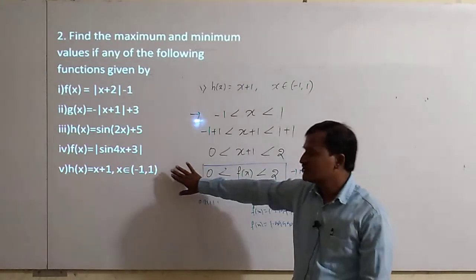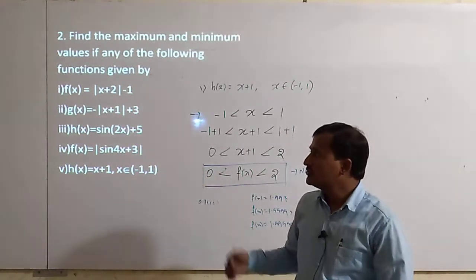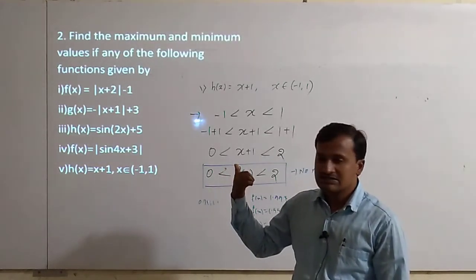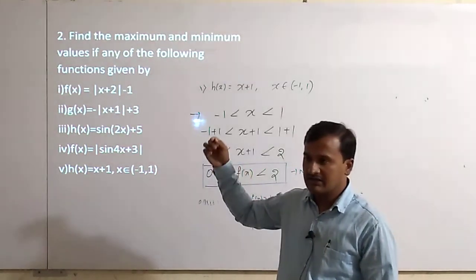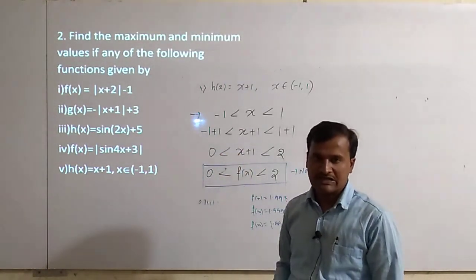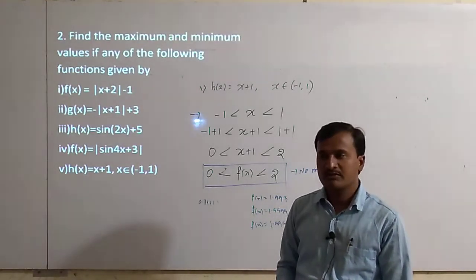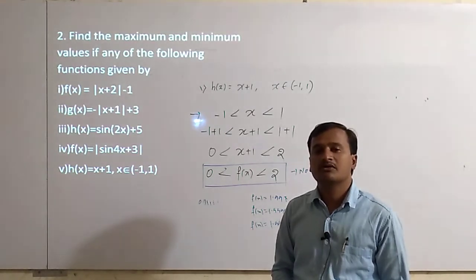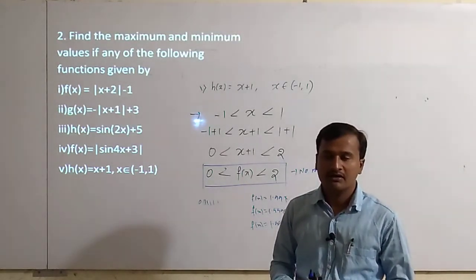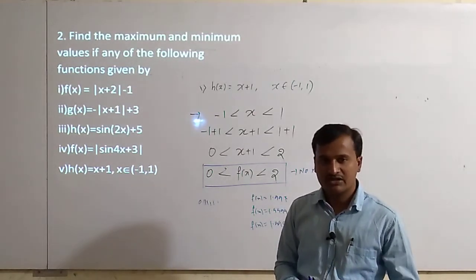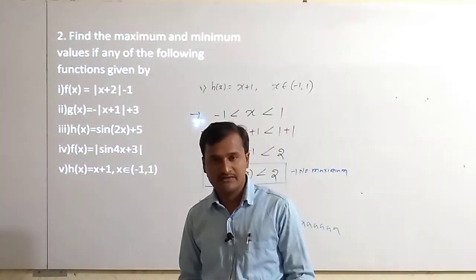Therefore, for this function there is no maximum and no minimum value. Up to this, these are the exercise 6.5 problems. We have completed the first and second main questions related to maxima and minima. In the next class we will discuss local maxima, local minima, critical points, the first derivative test, and the second derivative test. Thank you.